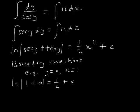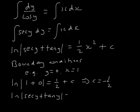Ln of 1 is 0, so therefore c equals minus a half. So our solution becomes ln(sec y plus tan y) equals a half x squared minus a half.